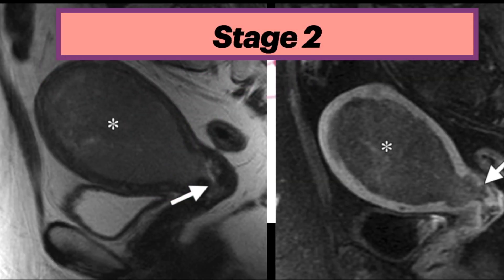Here's an example of stage 2 endometrial cancer. The sagittal T2 on the left shows endometrial cavity distension by a tumor extending into the cervix, denoted by the arrow. The contrast-enhanced MRI on the right, obtained two minutes after contrast injection, shows extension of the endometrial tumor into the cervix, with invasion of the cervical stroma posteriorly denoted by the arrow.